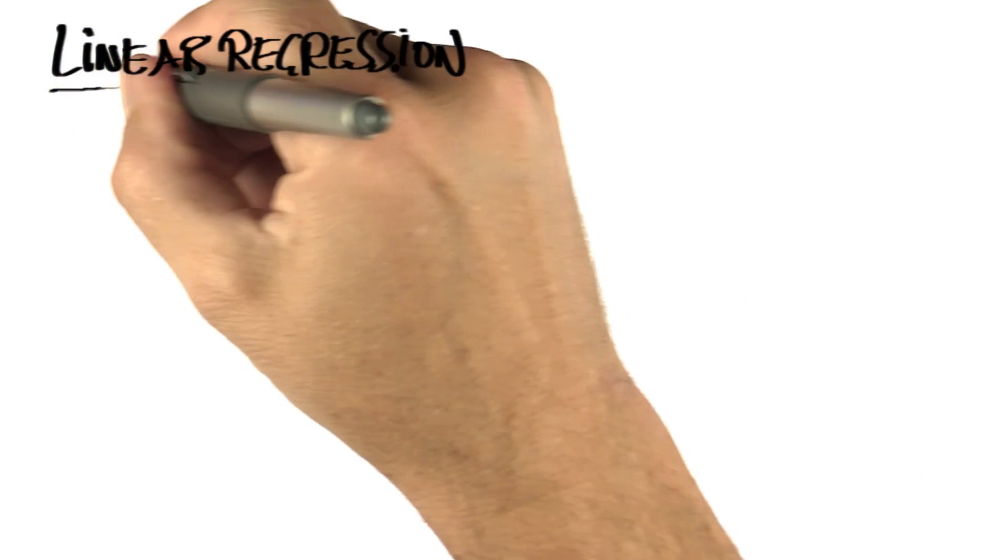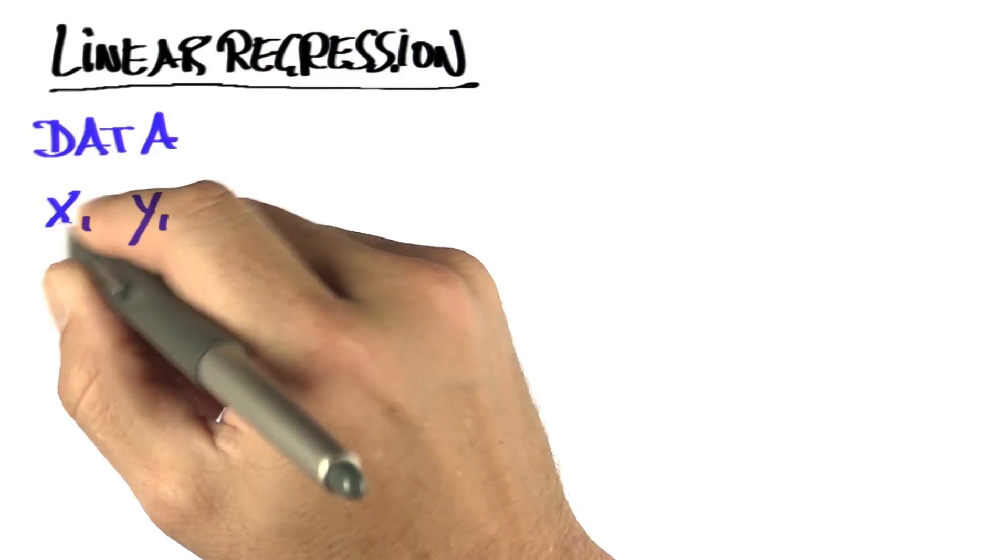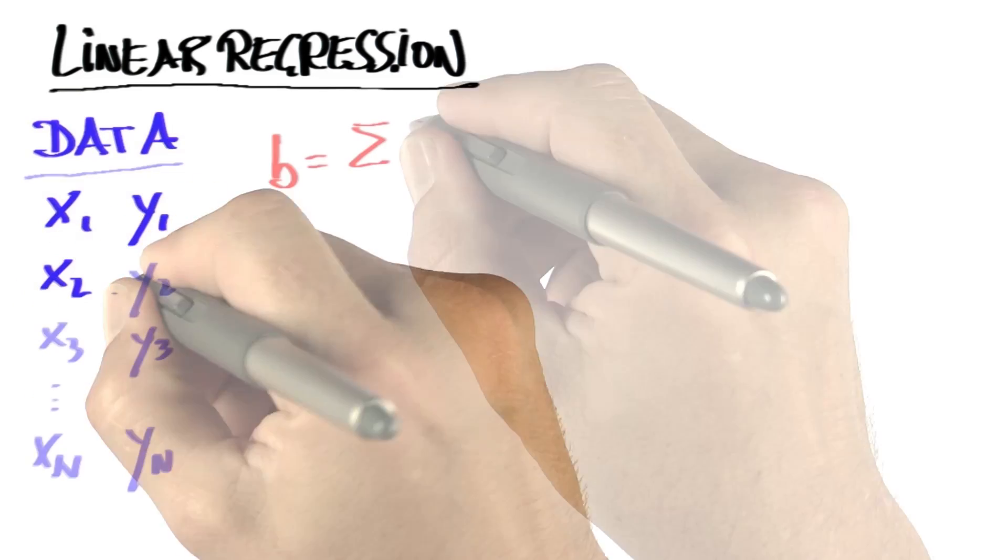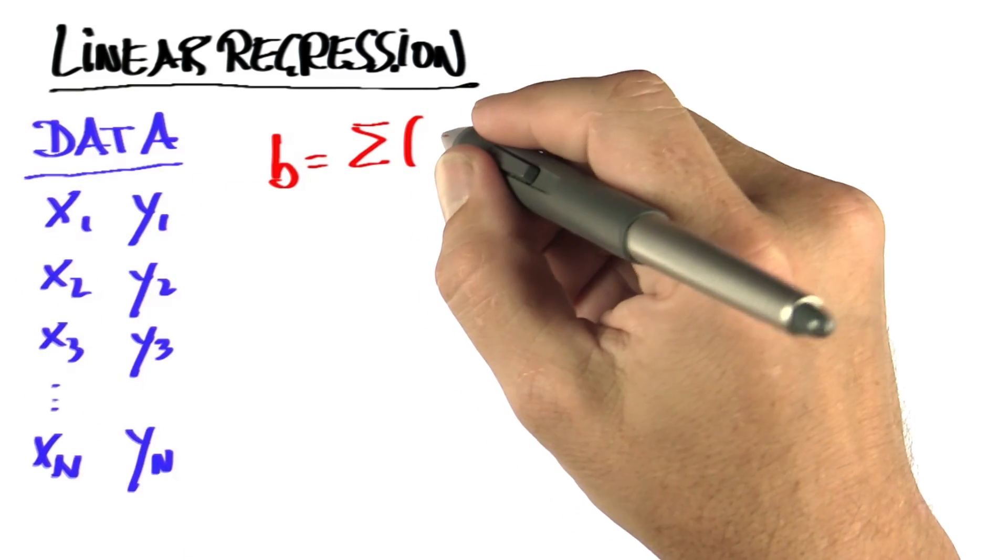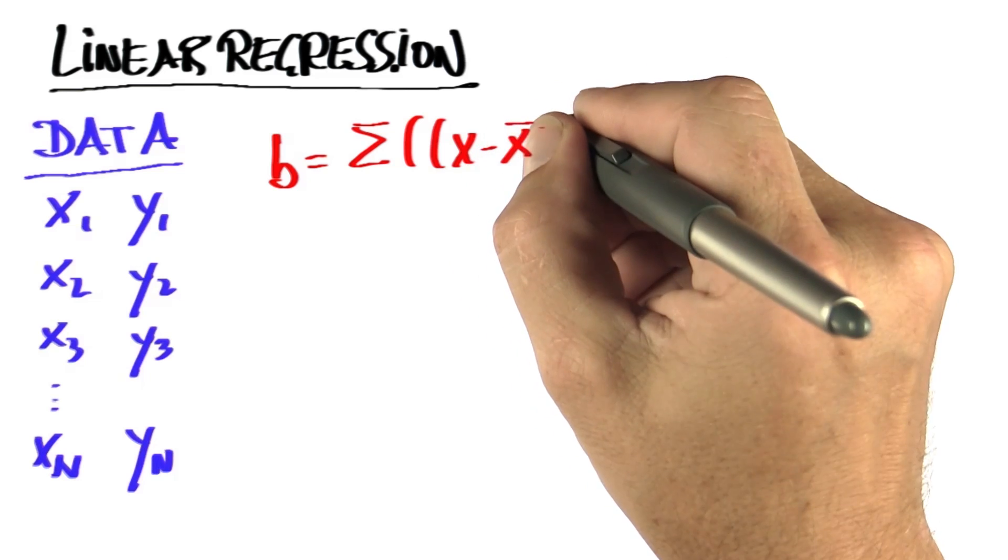So I won't give you the derivation, but I'll give you the formula. Let's start with b. Assuming your data comes in pairs for x and y, as indicated here, then the formula for b might look really complex at first, but I promise you it isn't.